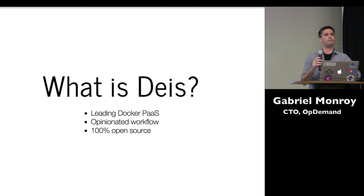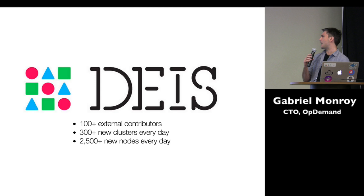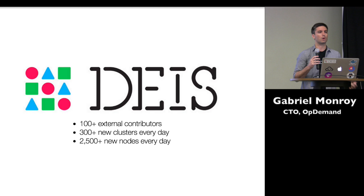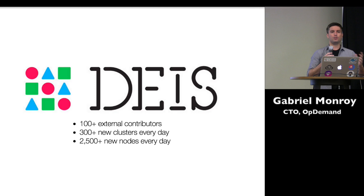Because of that approach, we've been able to get a working platform incredibly early. We shipped the first release of Deis back in August of 2013. Today we have lots of successful deployments — we're at almost 110 external contributors, seeing stats of 300 new clusters a day going up, 2,500 new nodes. The point is we deal with lots of real-world deploys. We have customers running serious workloads on Docker and through Deis. We've got experience not just with Docker in production, but also building composable systems, which is really what I want to talk about today.